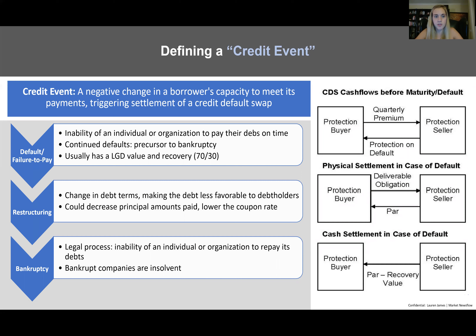A credit event is a negative change in a borrower's capacity to meet its payments, thus triggering a settlement of a credit default swap. Something bad happens — whether that's a default, failure to pay, restructuring, or bankruptcy proceeding — meaning you're not going to see the bond through to maturity and you get the CDS payout. ISDA has a form contract used when writing and agreeing on these contracts at initiation, but they are incredibly bespoke, entirely OTC — not exchange traded — and can be written on almost anything.